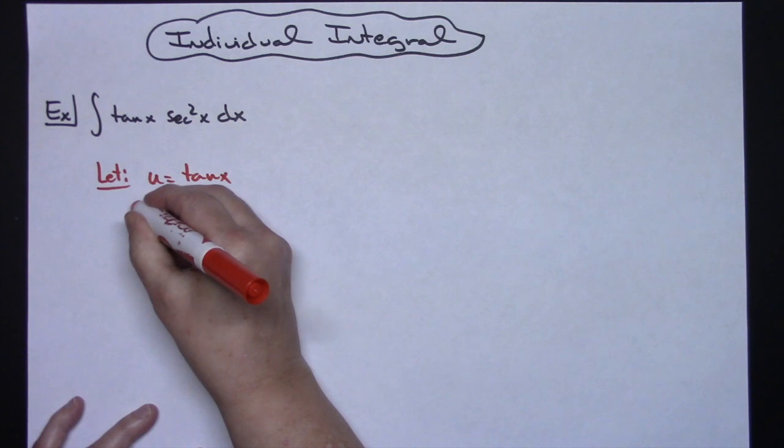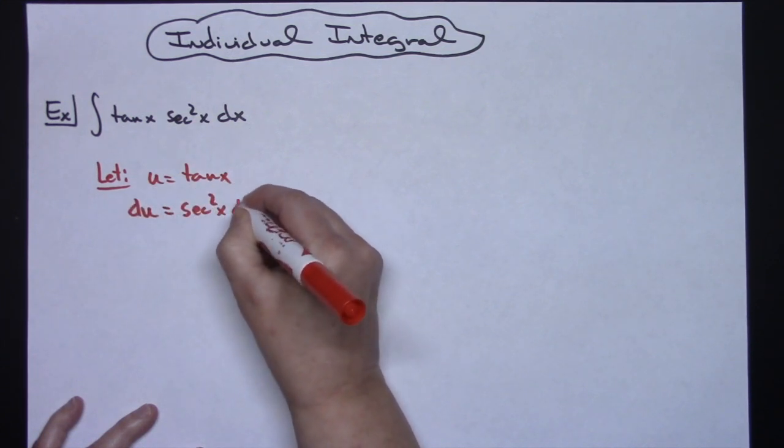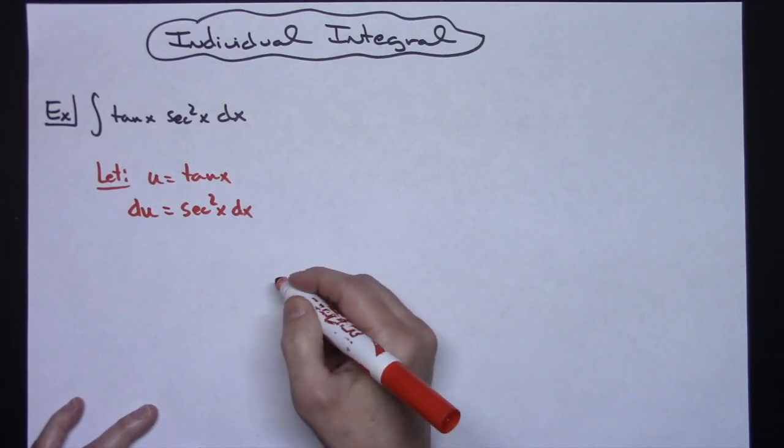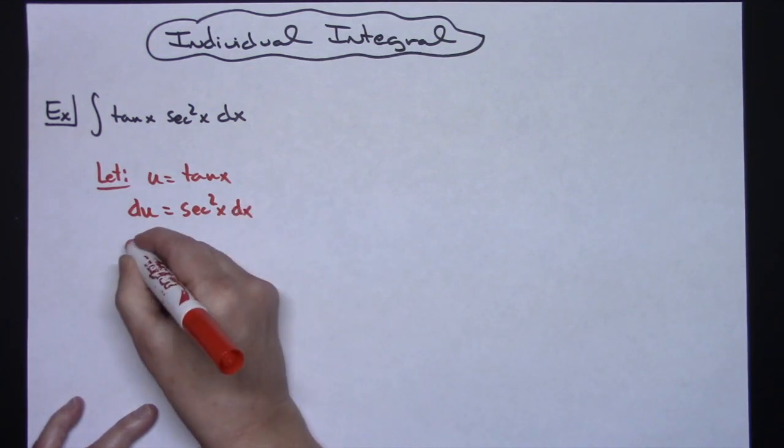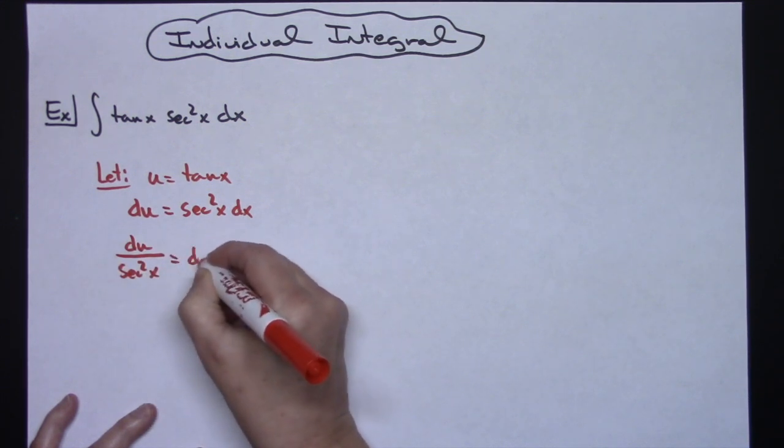From there, I'm going to take the derivative of both sides. So du is equal to secant squared x dx. And I'm going to go ahead and solve all the way down for that dx. So I'll have a du over a secant squared x is equal to dx.